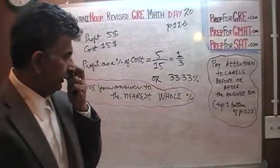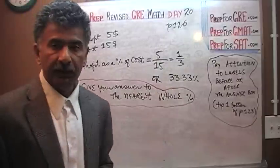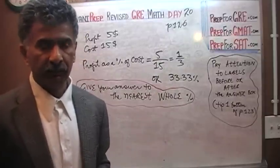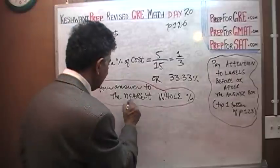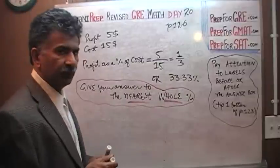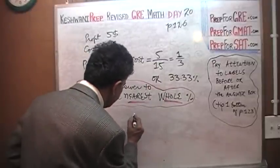And we end up typing in 33.3 or 33.33 and you get no credit for it because they are asking for the nearest whole number, the nearest whole percentage. And therefore, the answer here would be simply 33.